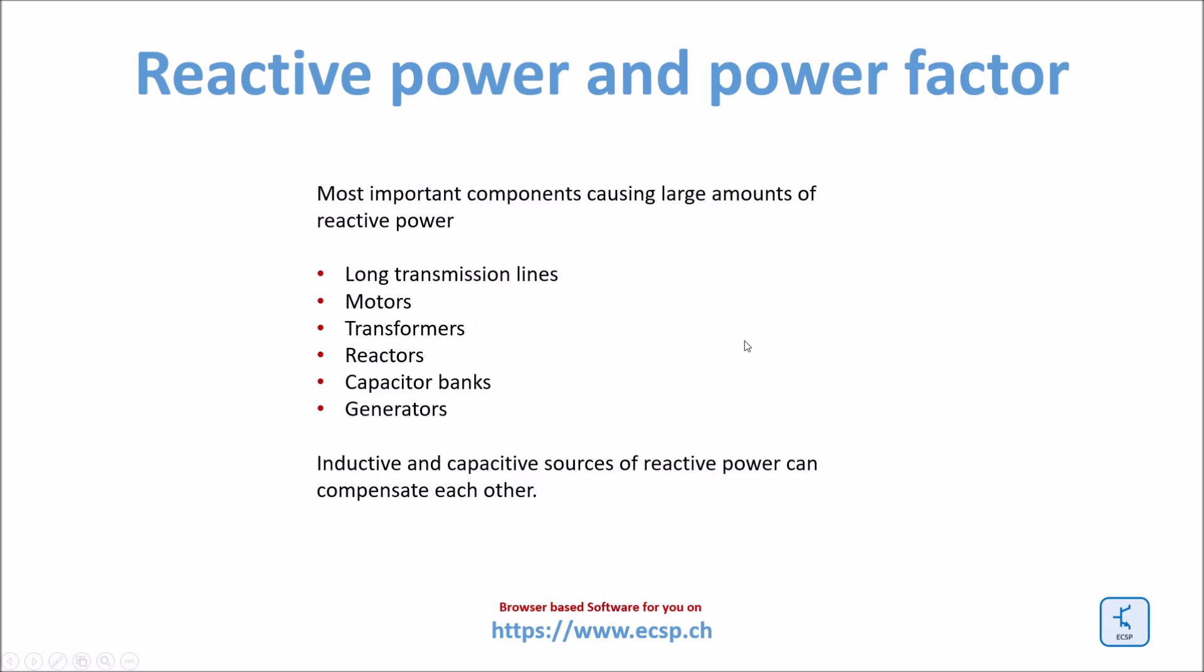Here are the most important components which cause a large amount of reactive power in power systems. First of all, long transmission lines, then motors, transformers, reactors, capacitor banks, and generators.